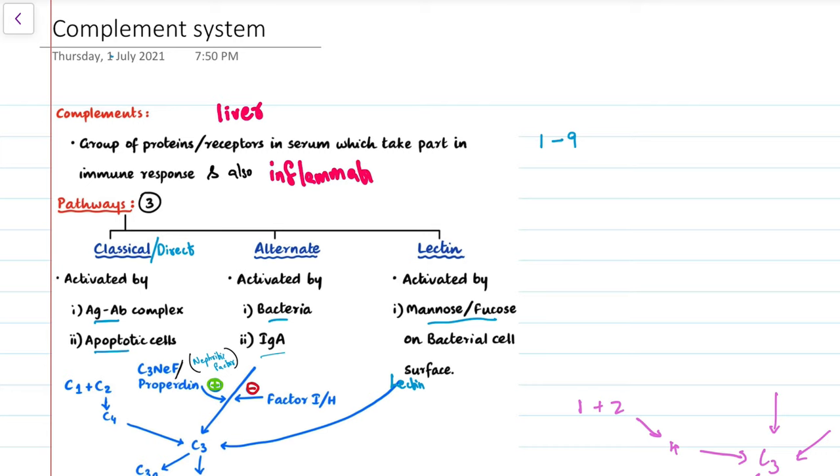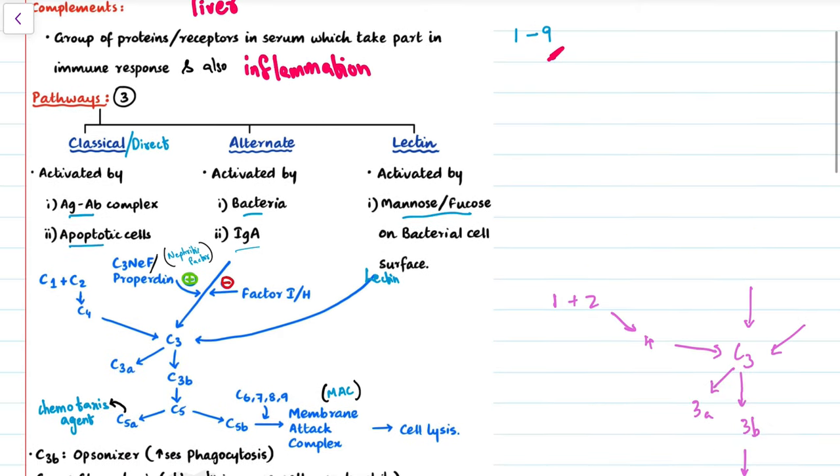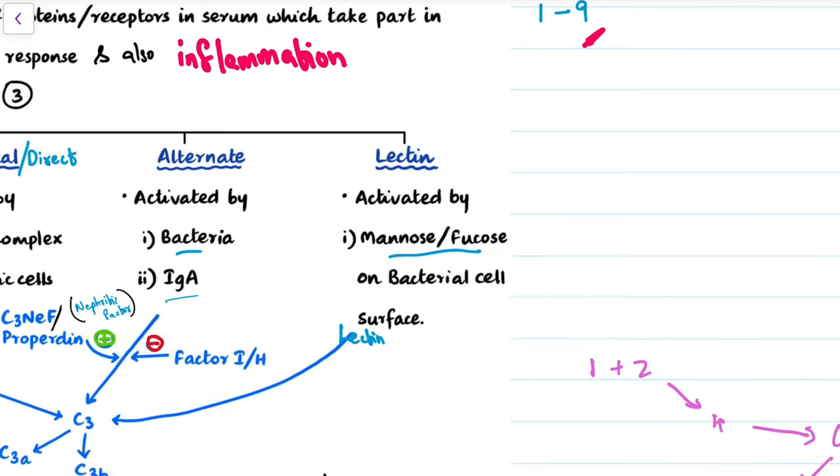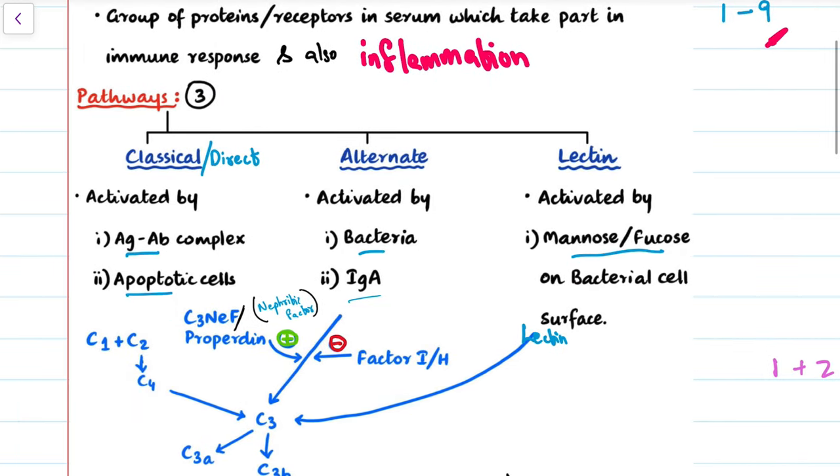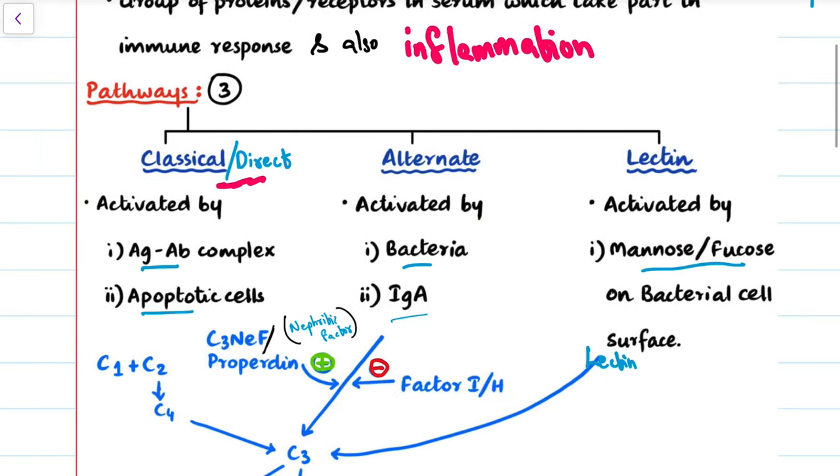There are actually nine types of complements. The complement system has three pathways: the first one is the classical pathway, which is also called the direct pathway; the other one is the alternate pathway; and then there's the lectin pathway. All these pathways actually have to be activated or triggered.